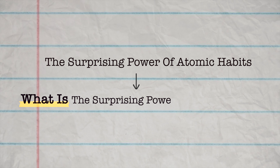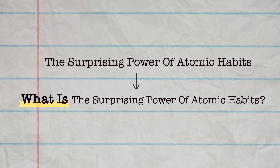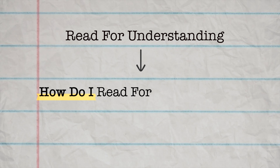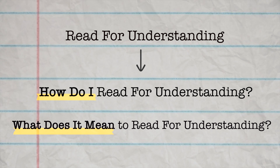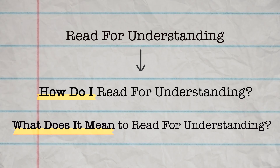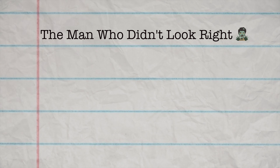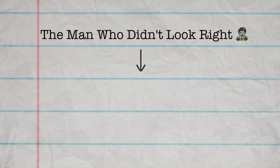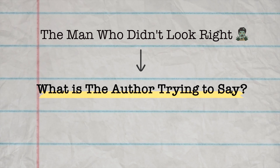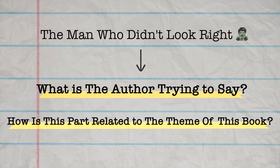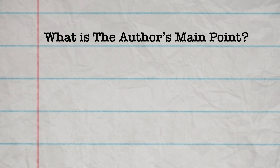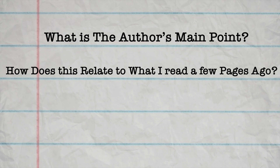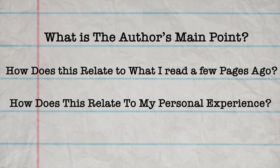For example, if the title is 'The Surprising Power of Atomic Habits,' you can turn that into 'What is the surprising power of atomic habits?' And if the title is 'Read for Understanding,' you can turn that into 'How do I read for understanding?' For cryptic titles like 'The Man Who Didn't Look Right,' you might ask, 'What is the author trying to convey?' or 'How is this part related to the theme of this book or chapter?' Other questions we can ask are: What is the author's main point? How does this relate to what I read a few pages ago? How does this relate to my personal experiences?